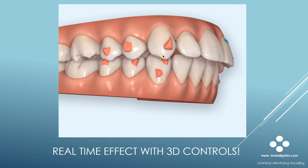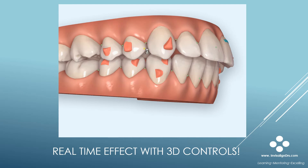Here's a class 2 case. Upper right IPR was added to improve the right cuspid relationship. Note the real-time effect of adding that IPR in the upper right quadrant.